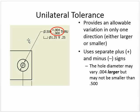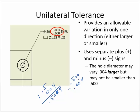Unilateral means the tolerance goes only one direction. Up here we have 0.5 plus 0.004 — it could be as large as 0.504. And then we could have 0.5 minus 0.004, giving us 0.496. So it would have to fit within that range.